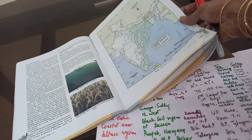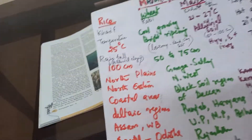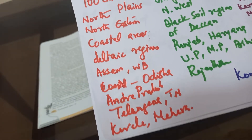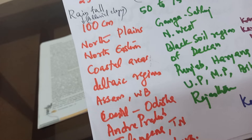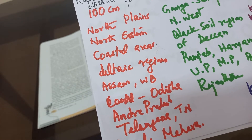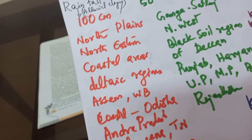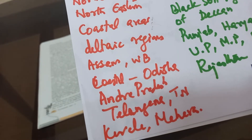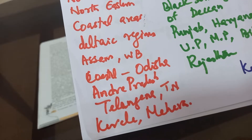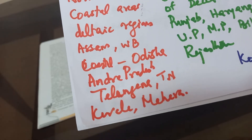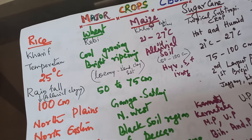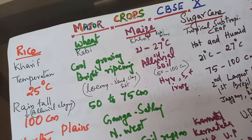The major rice growing areas are the plains, northeastern India and coastal areas, and deltaic regions — Assam, West Bengal, coastal Odisha, Andhra Pradesh, Telangana, Tamil Nadu, Kerala, and Maharashtra. The temperature is 25 degrees Celsius and rainfall is 100 cm. That is the average temperature.